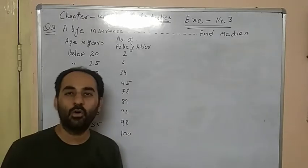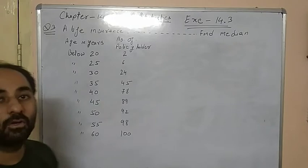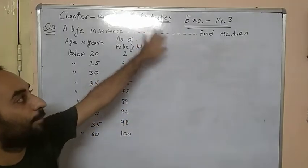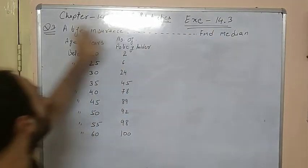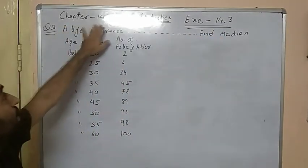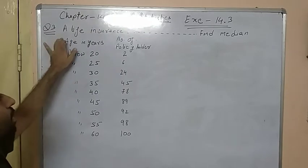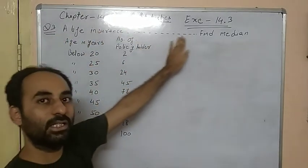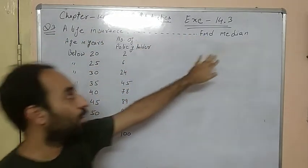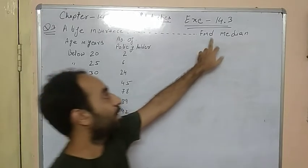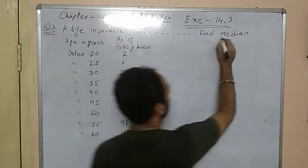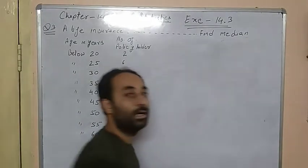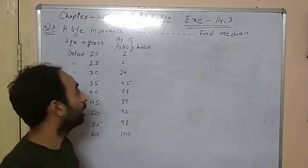Hello students. Now we are going to discuss Statistics Chapter 14, Exercise 14.3, Question No. 3. A Life Insurance Company — you can see the question in the book. The main point is to find the median. Now we are going to solve a different variety of questions.